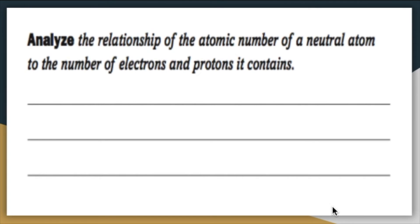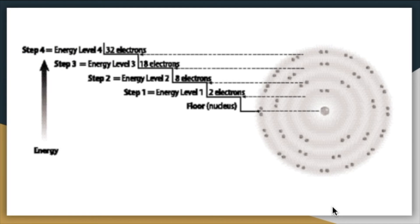The reading check question: analyze the relationship of the atomic number of a neutral atom to the number of electrons and protons it contains. The atomic number tells us how many protons there are. For a neutral element, the number of protons equals the number of electrons exactly. From the number of protons, we find the number of electrons, which tells us how many electrons are in that element. We can then use the chart to know where all those electrons should exist, or use the periodic table columns to make that prediction.